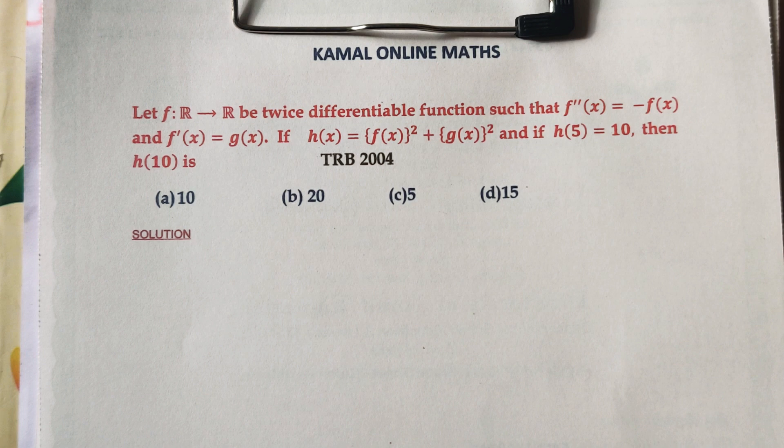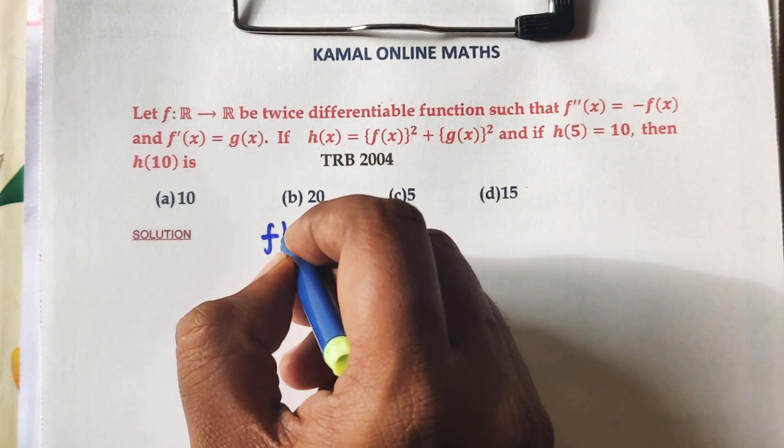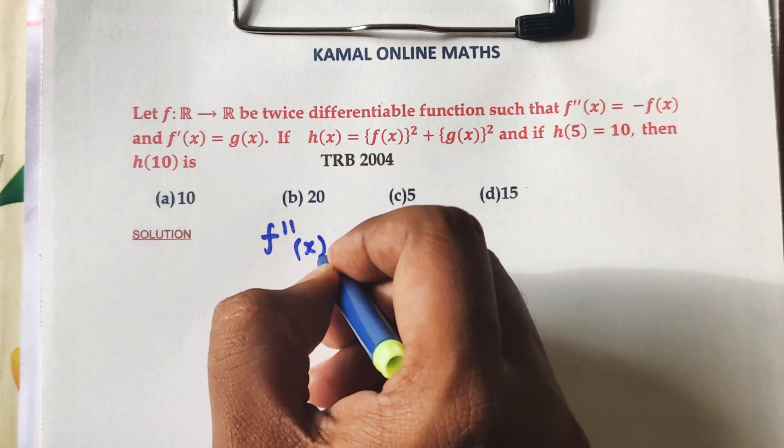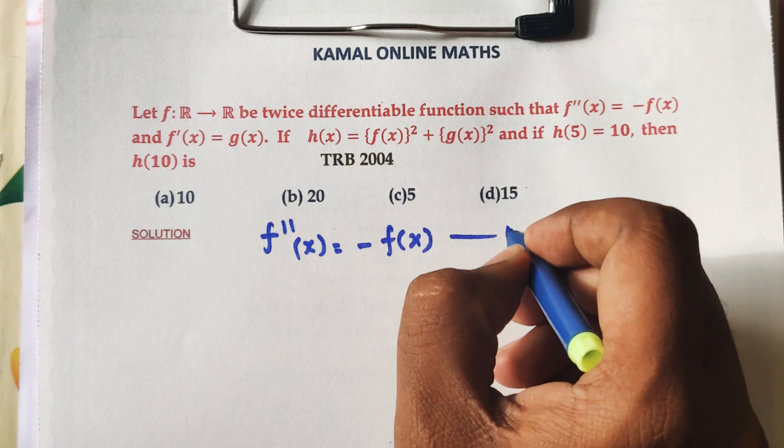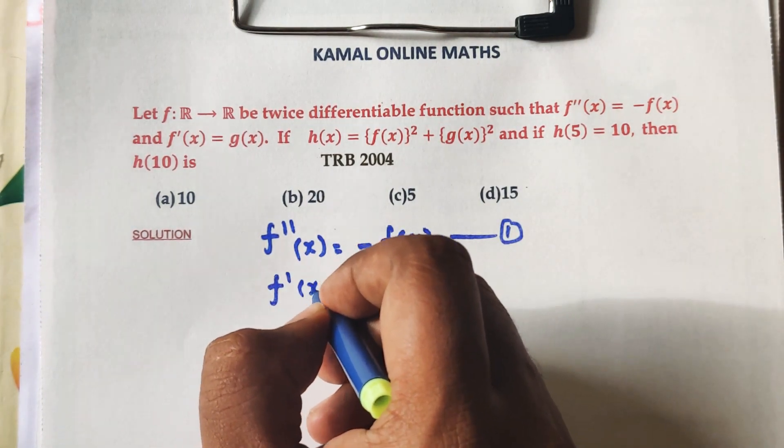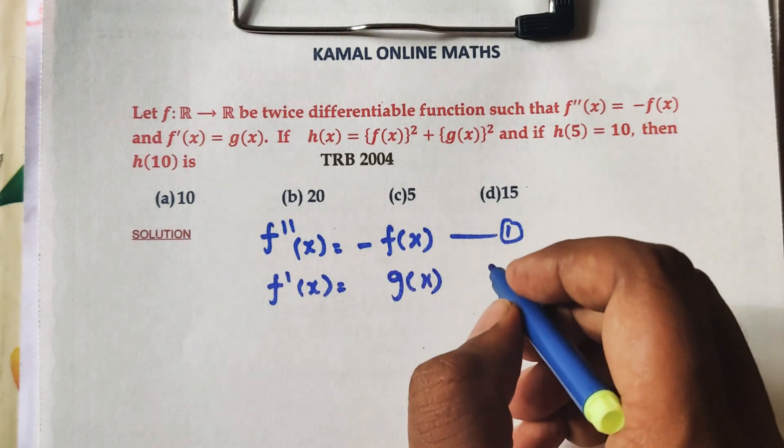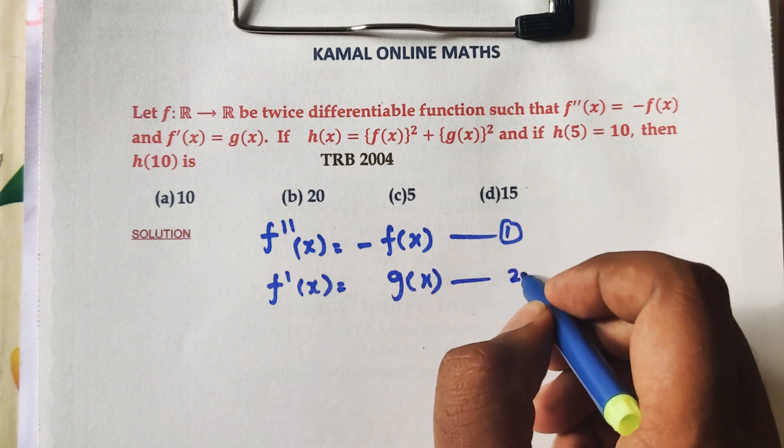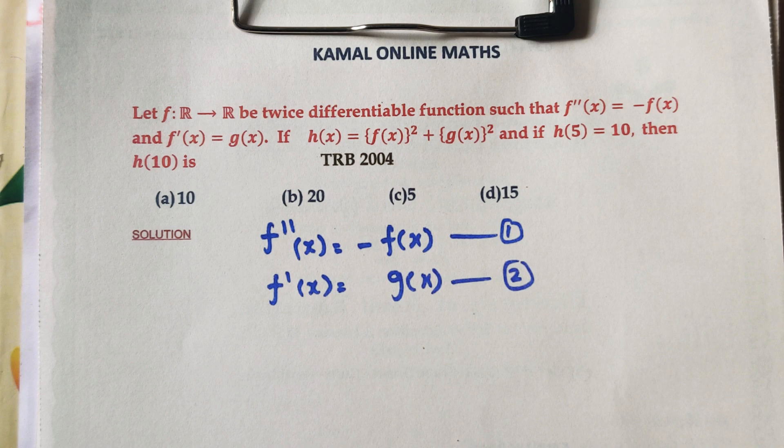Solution: F double dash X equals minus F of X, this is equation one. Also, F dash X equals G X, this is equation two. Now differentiate the second equation.